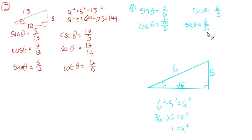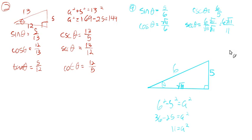But then we do that rationalizing the denominator thing, where we multiply the numerator and denominator by √11. When you multiply √11 × √11 you just get 11, and up top we get 6√11. This comes from the days of slide rules — before any calculators at all, not just graphing calculators but even the cheapest calculator. Slide rules could not divide by the square root of 11.